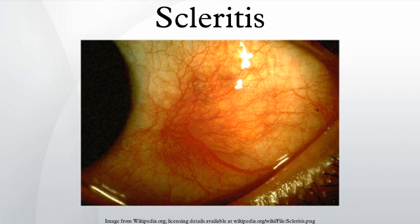Unlike in conjunctivitis, this redness will not move with gentle pressure to the conjunctiva. Scleritis can be classified as anterior scleritis and posterior scleritis. Anterior scleritis is the most common variety, accounting for about 98% of the cases.